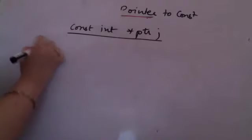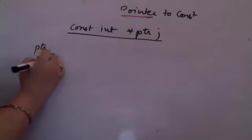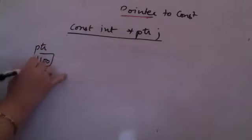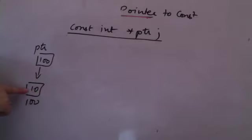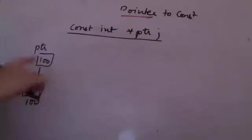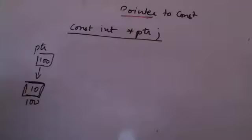If the pointer is pointing to address 100 and address 100 is storing the value 10, then the value at that address cannot change — this cannot change. But 100 itself can change; the address stored in the pointer is still a variable. The value stored at the address, however, is not a variable anymore. Let us now try to see this using an example.